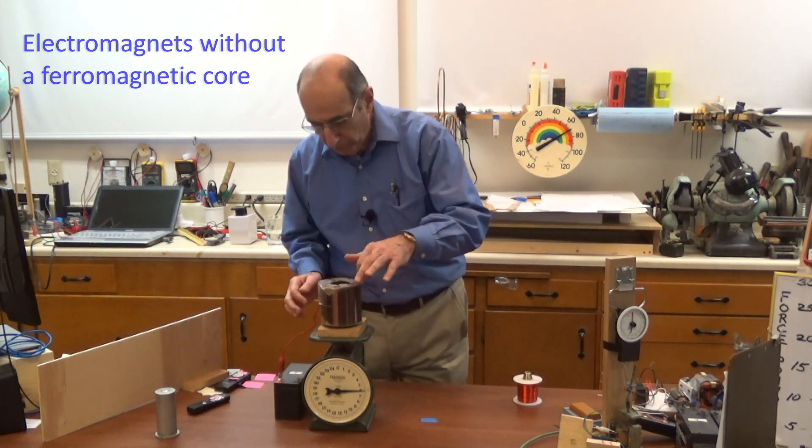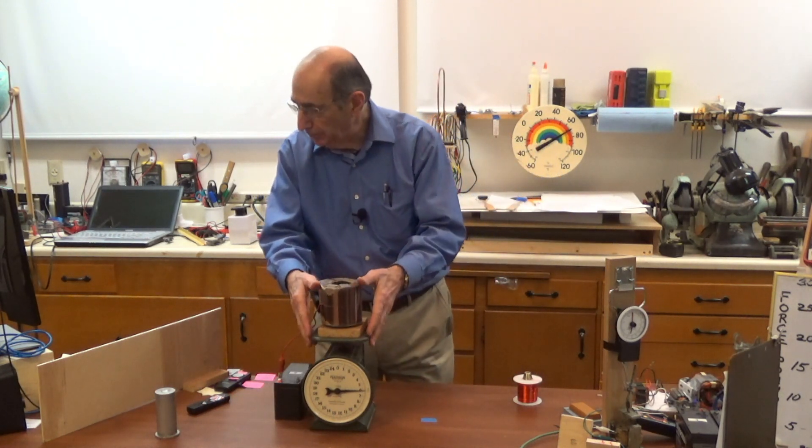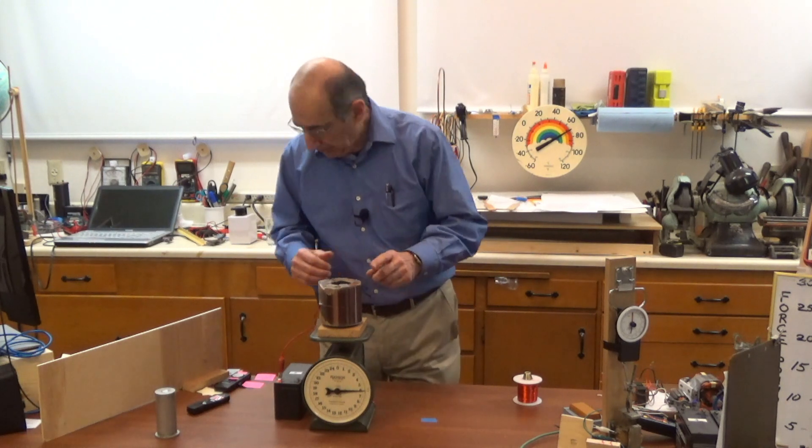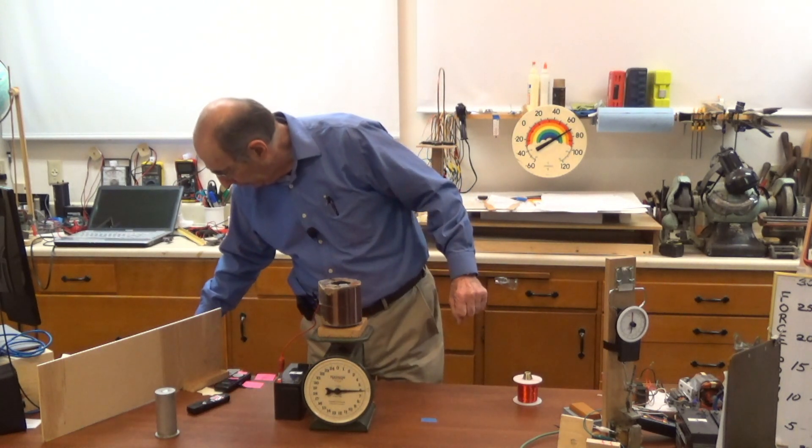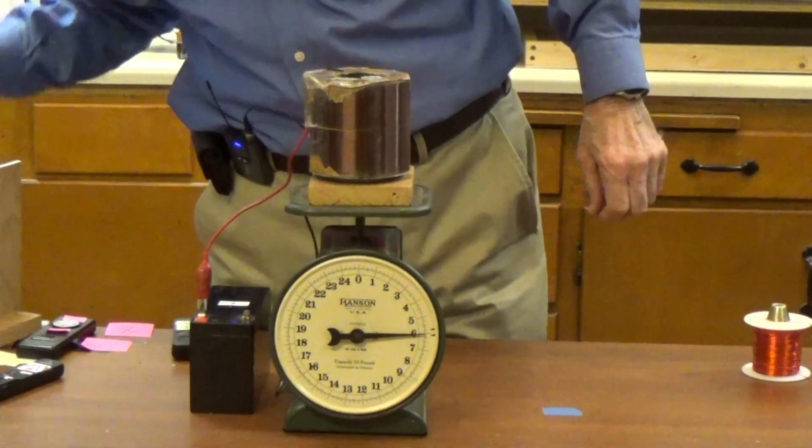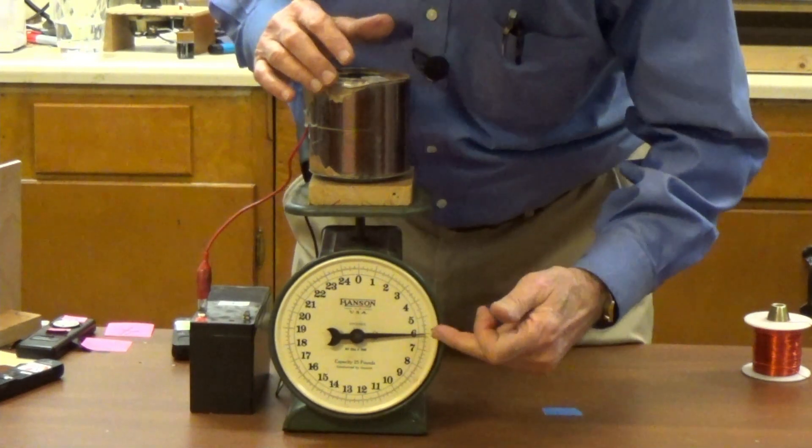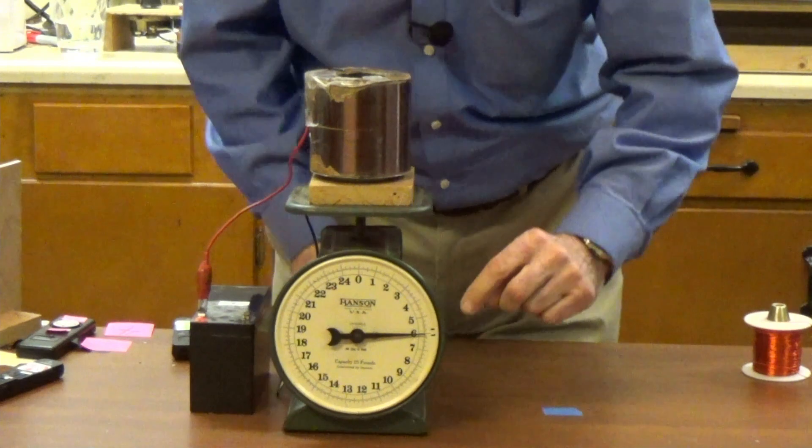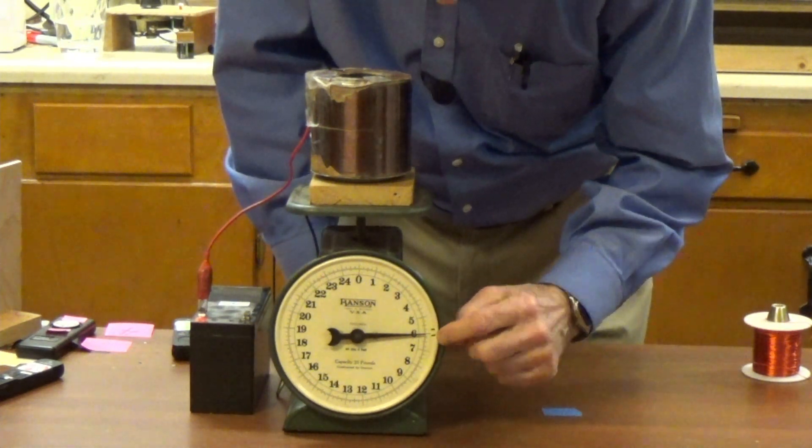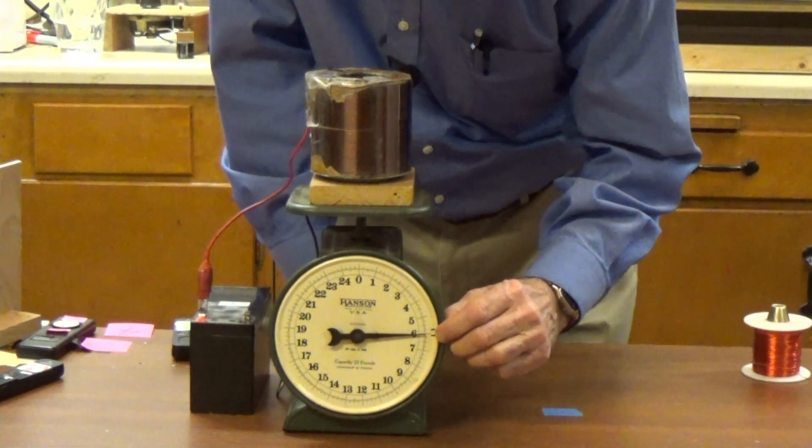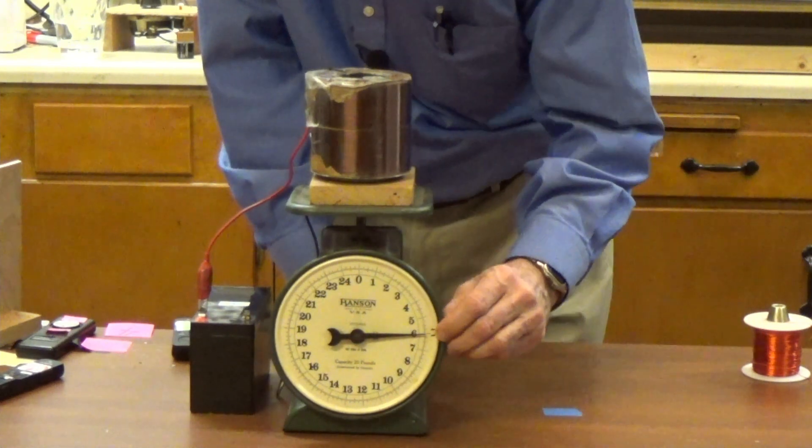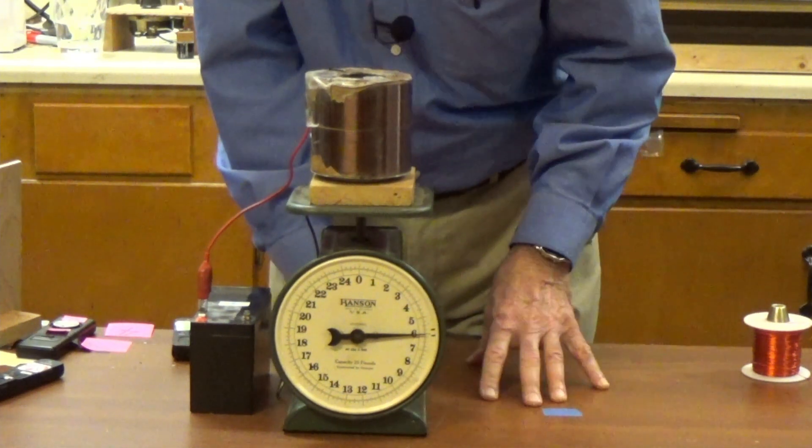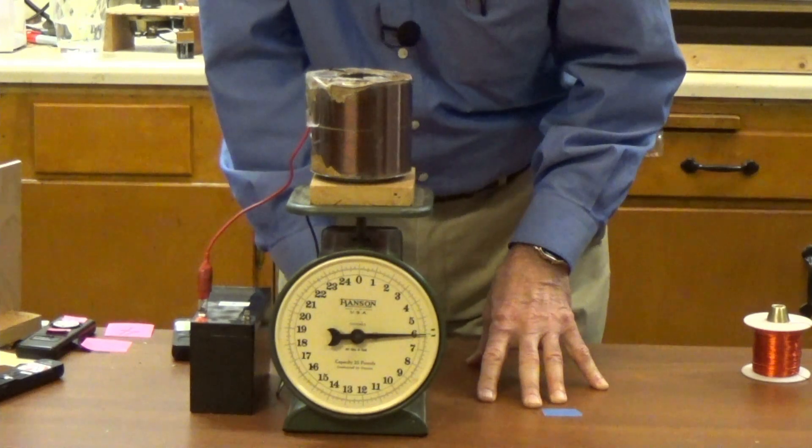So we have here a coil of wire sitting on a scale and let's take a close-up of the scale here so you can see what's going on. You notice that this coil weighs about six pounds and the needle is pointing over here and there's two little marks. The space between those two little marks is a quarter of a pound.